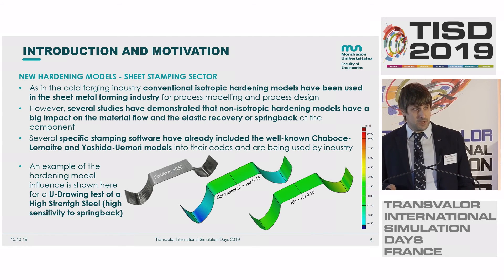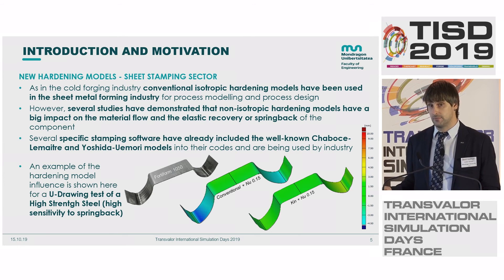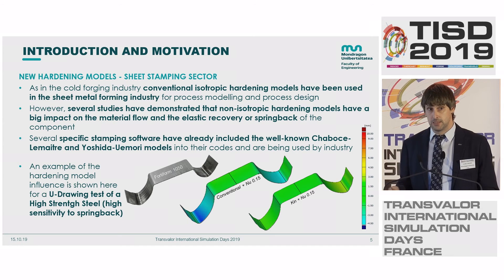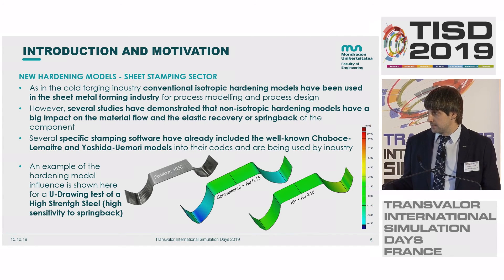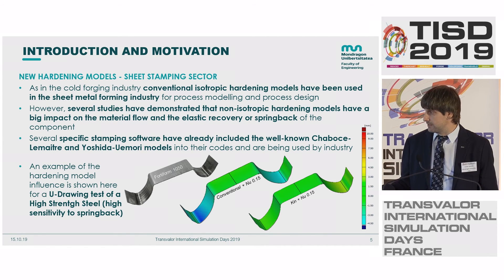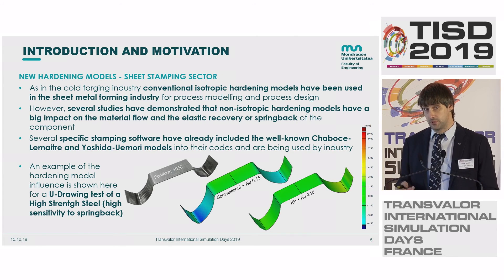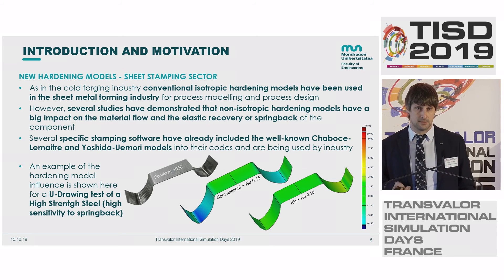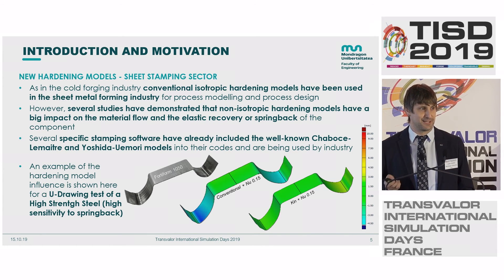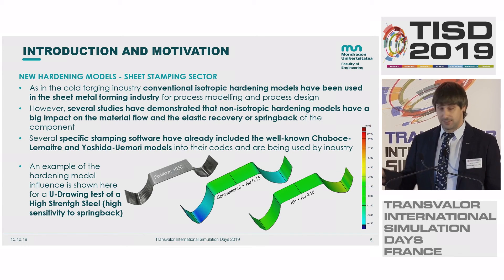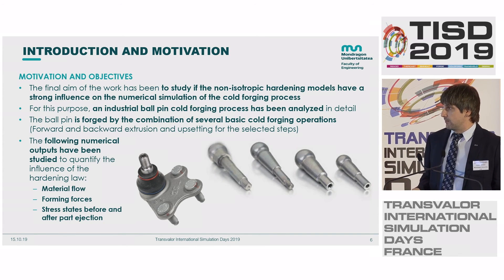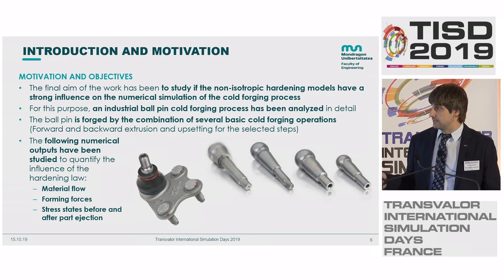The motivation: if you work in sheet metal forming, mixed kinematic hardening models are already used in industry. Here is an example of how they can influence springback. A conventional isotropic hardening model versus a kinematic model shows a big influence on residual stresses and springback — it's really important for that sector. So we thought, why not apply this in cold forging?